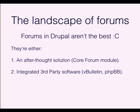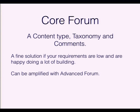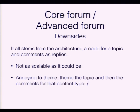The obvious place to start is the current landscape, which is pretty much one of two things. You can either go with Core Forum — and if you really feel like it, amp it up with Advanced Forum — or you can go with third-party integration, things like vBulletin, PHP BB, and so on. And of those choices, they're not really great ones. Core Forum is architecturally pretty simple, not too far from how it started in Drupal 4.6, where you've got a content type and comments against it. You get this kind of disjointed experience because of it — if you wanted to theme a discussion, you theme the node and then theme the comments separately.